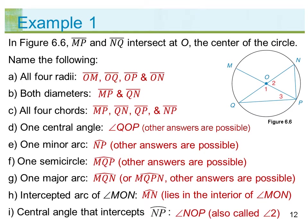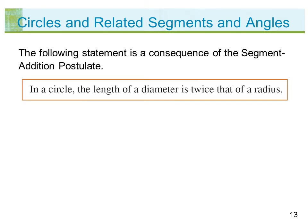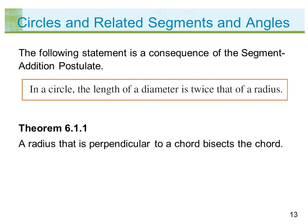Angle NOP is also called angle 2. The following statement is a consequence of the segment addition postulate: in a circle, the length of a diameter is twice that of a radius. Theorem 6.1.1: a radius that is perpendicular to a chord bisects the chord.